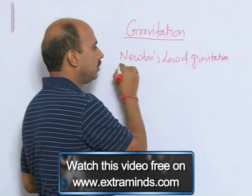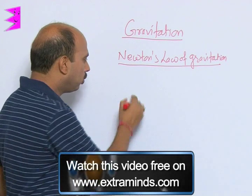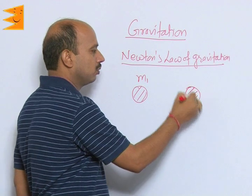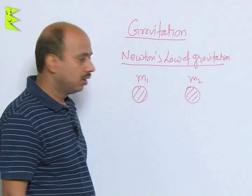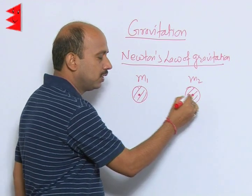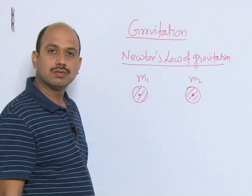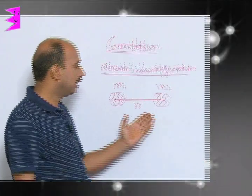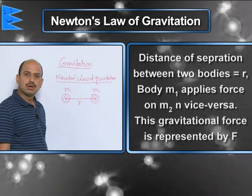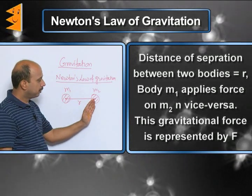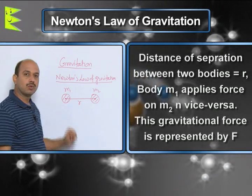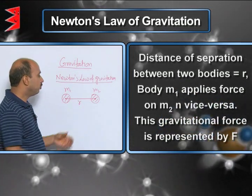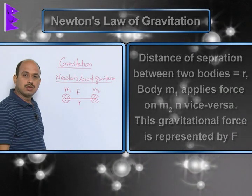In Newton's Law of Gravitation, if you have two objects having masses m₁ and m₂, the centers of these two bodies are separated by a distance r. So here we have taken the distance of separation between the two bodies. Body 1 applies a force on body 2, and body 2 applies a force on body 1. This force is known as the force of gravitation, and this force of gravitation is F.